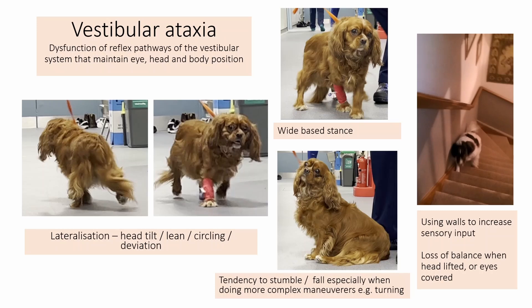We have three types of ataxia: cerebellar, proprioceptive, and vestibular. This is a vestibular ataxia, which reflects dysfunction of those reflex pathways that maintain eye, head, and body position — because we always want to keep everything central and balanced. With vestibular disease you tend to lean to one side, have your head tilted to one side, and your eyes will deviate to one side.